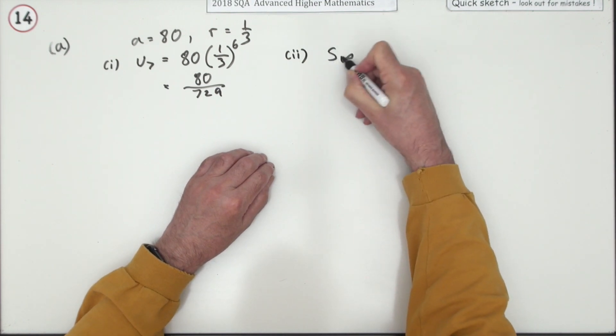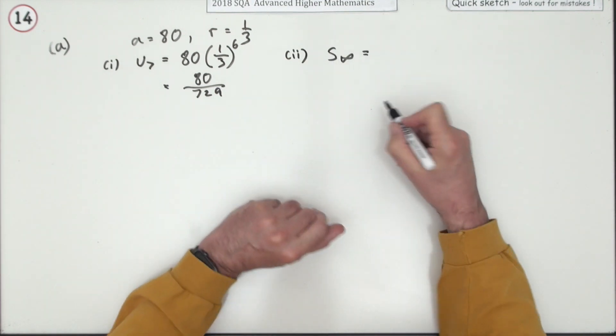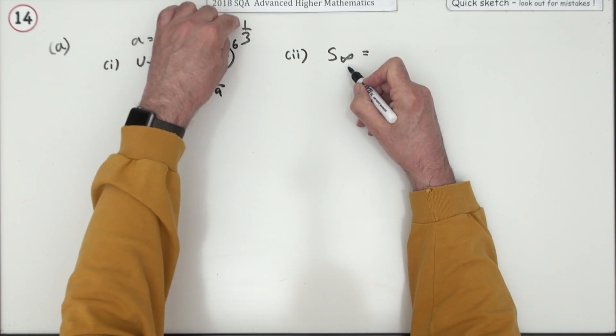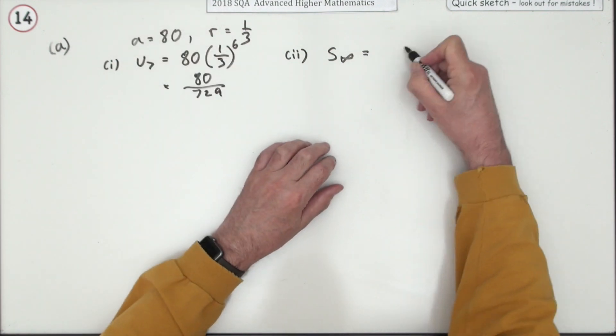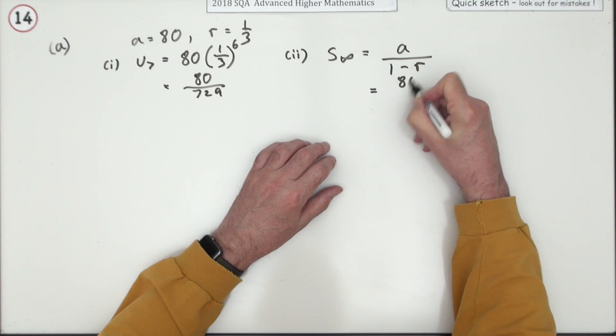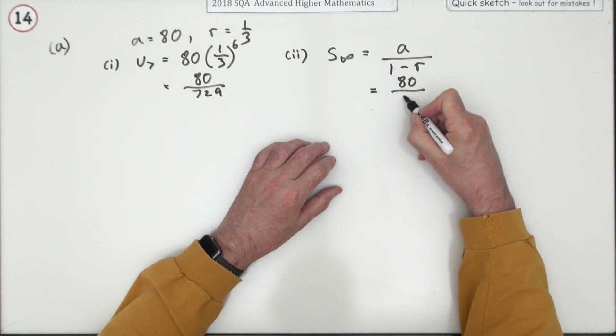Then it's the sum to infinity. Well, you get the formula at the front for the sum to n terms. However, if r is a fraction, when the power gets big enough, that just disappears and you're only left with the a part on top. a over 1 minus r. So, it'll be 80 over, I'll just go straight in with it, 2 thirds.